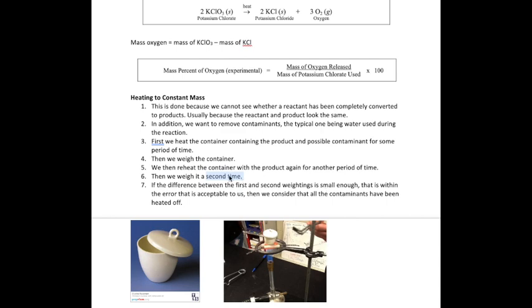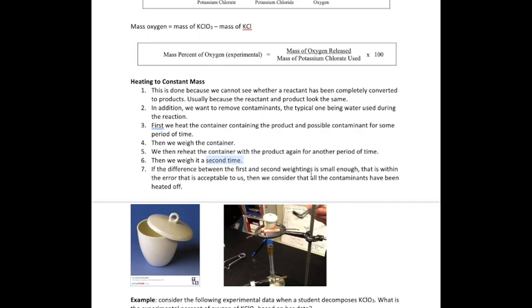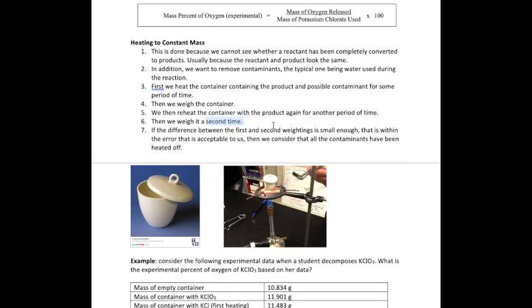If the difference between those two masses is small enough, we know we're done with the heating and have our final product. If the difference is too large, we're not done yet, so we repeat the heating a third time. We keep repeating until the mass is constant enough or the difference is small enough that we can accept it—there's a certain level of error we're comfortable with, and at that point we can stop.